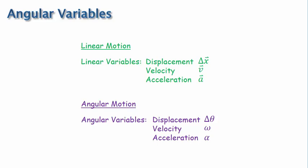As we discuss angular variables, you'll notice they are more closely related to polar coordinates, while linear variables are more closely related to Cartesian coordinates. Now let's look at each angular variable in detail, starting with angular displacement.